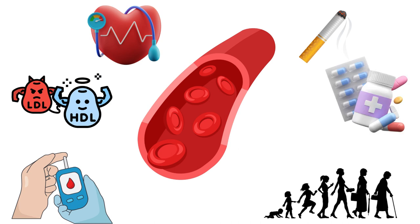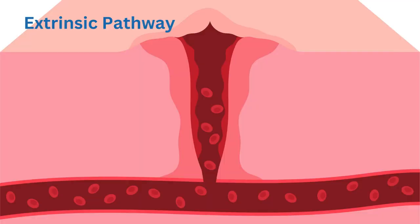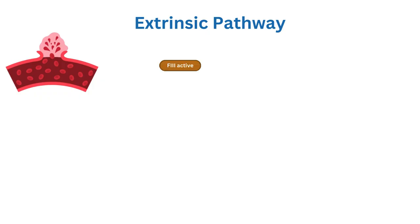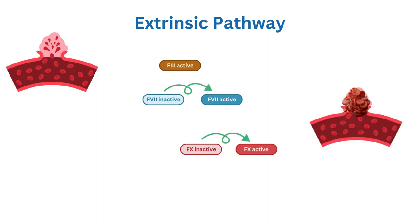The extrinsic pathway is initiated by tissue damage outside of blood vessels. Tissue damage releases tissue factor, also known as Factor 3, which then activates several other steps, of which activation of Factor 10 is the last step.